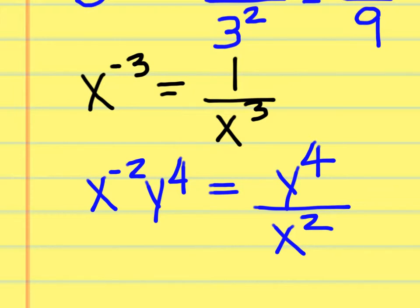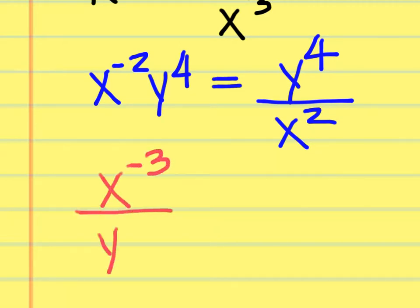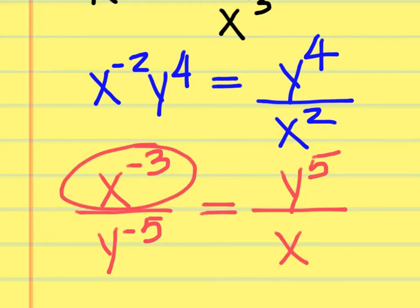Don't automatically move everything to the denominator — only move items with negative exponents. For example, x to the negative 2 times y to the fourth: only x to the negative 2 moves to the bottom, becoming x squared, while y to the fourth stays on top, giving y to the fourth over x squared. If you have a negative exponent on the bottom, move it to the top and make it positive.